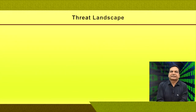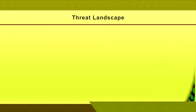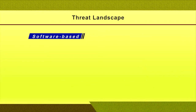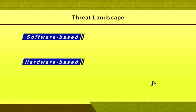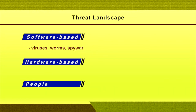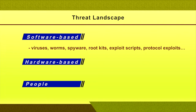When we talk about hacking, I would like to stress upon the threat landscape. In a nutshell, the threat landscape consists of: software-based threats, hardware-based threats, and people. Software-based threats could include viruses, worms, spyware, rootkits, exploit scripts, protocol exploitation, and so on — these all come under software-based threats.